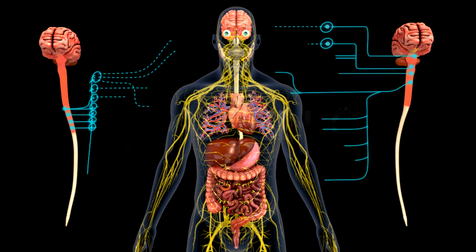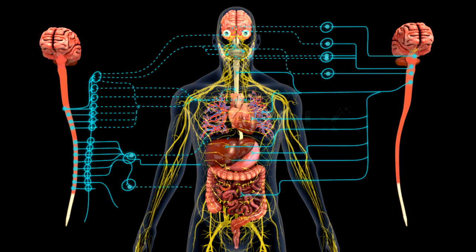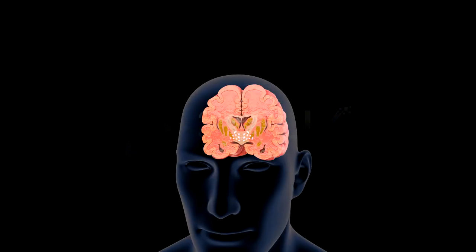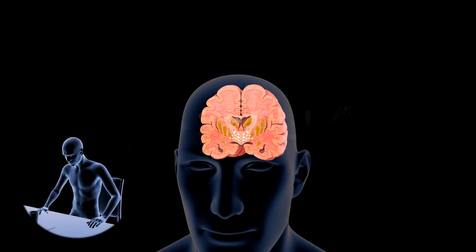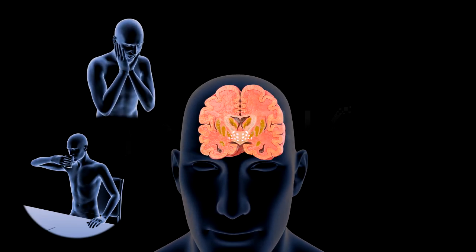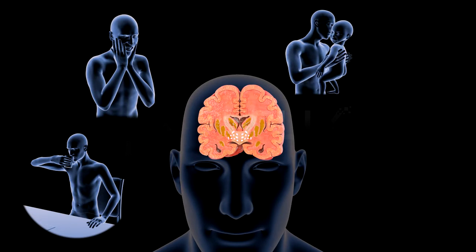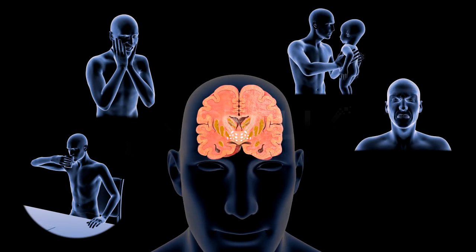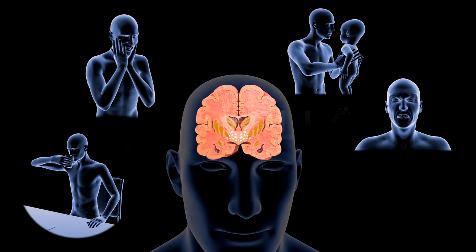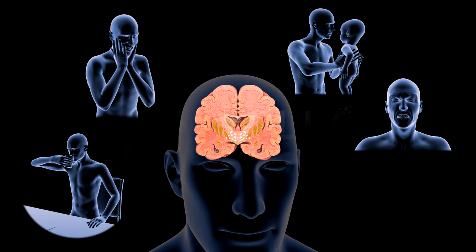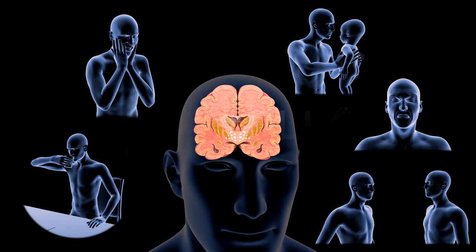The hypothalamus integrates and controls the functions of the autonomic neural system. It has centers for hunger, thirst, satiety, love, anger, sex, metabolism, osmoregulation, thermoregulation, and behavior.